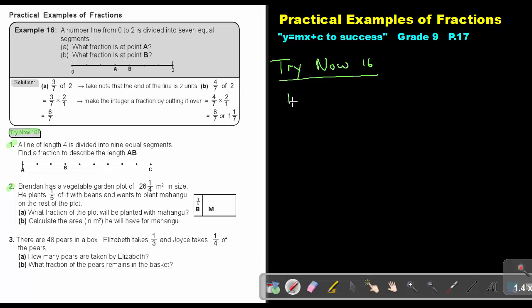Okay, number 1. A line of length 4, so this is now not 2, but 4, is divided into 9 equal segments. Find a fraction to describe the length A, B. Okay,